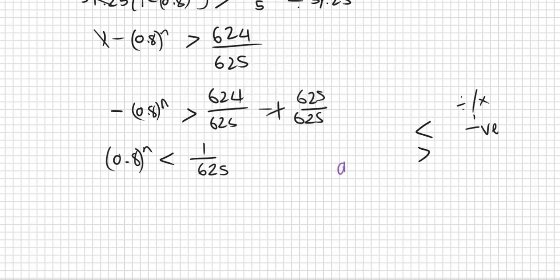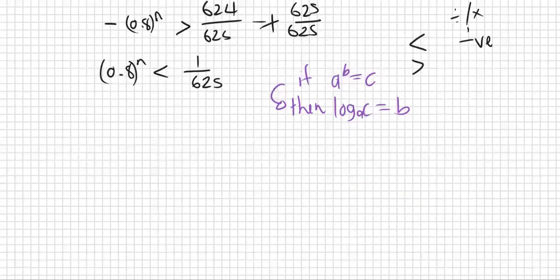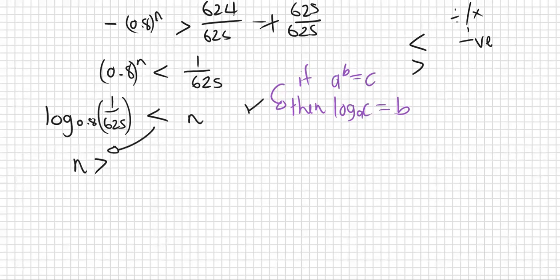Let's use our log law. If a to the power of b equals c, then log base a of c equals b. So log base 0.8 of 1 over 625. Put this in the calculator: log 0.8 and n is going to be larger than this. That gives us 28.8502 and so on.